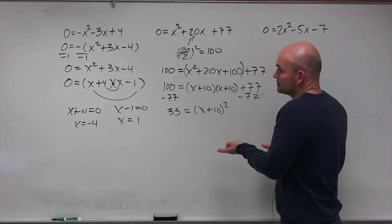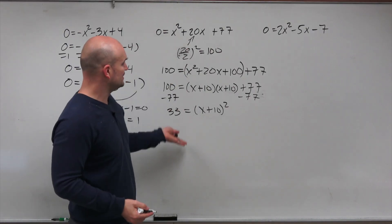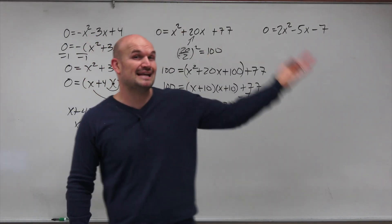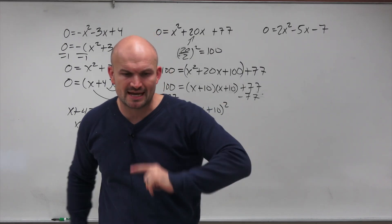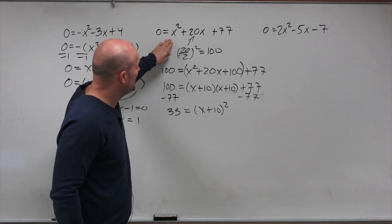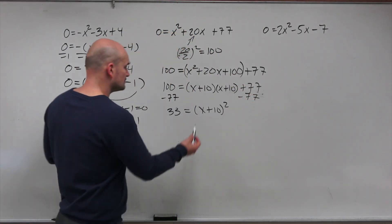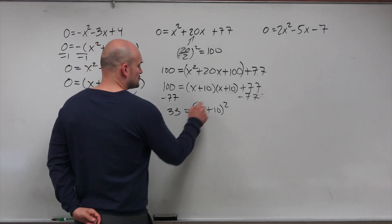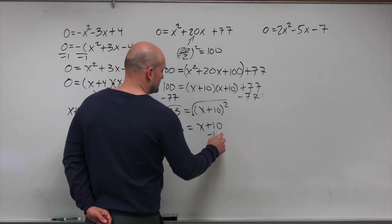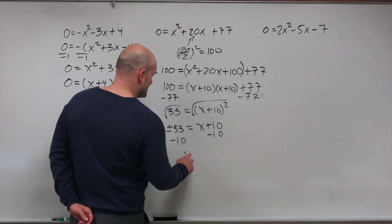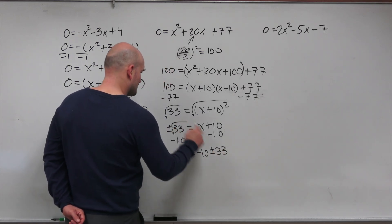The nice thing about completing the square is that if you don't have something factorable, you can complete the square by taking your middle term and dividing by 2. You can do that for any middle term, but typically when your middle term is an odd number or you have a leading coefficient, I wouldn't recommend completing the square unless you're comfortable with it. So now you introduce the square root to both sides: plus or minus the square root of 33 equals x plus 10. Subtract 10 on both sides, giving x equals negative 10 plus or minus the square root of 33.